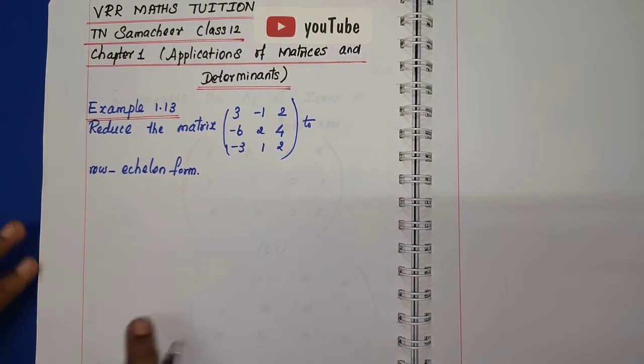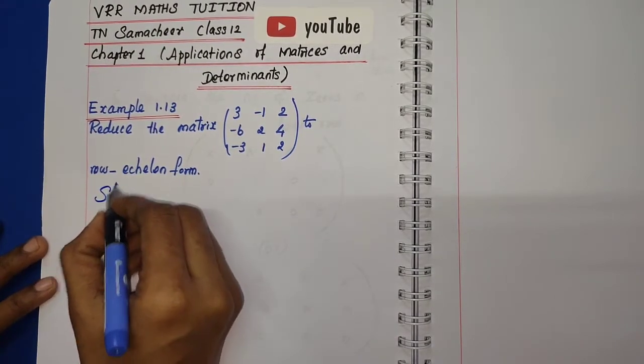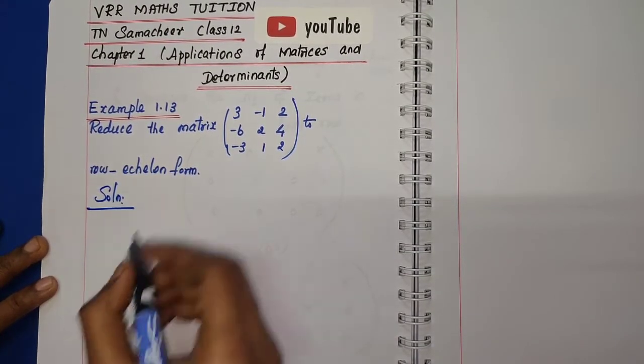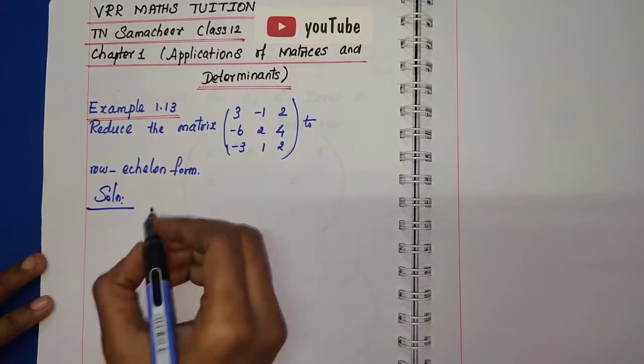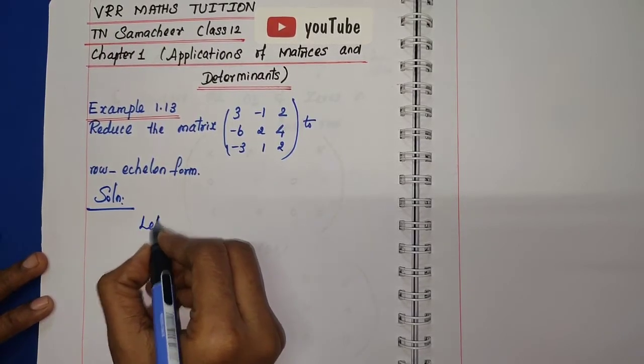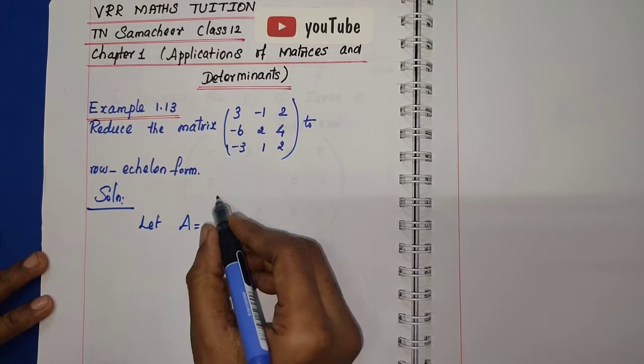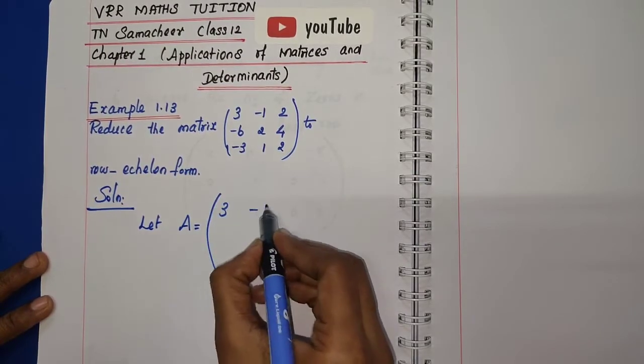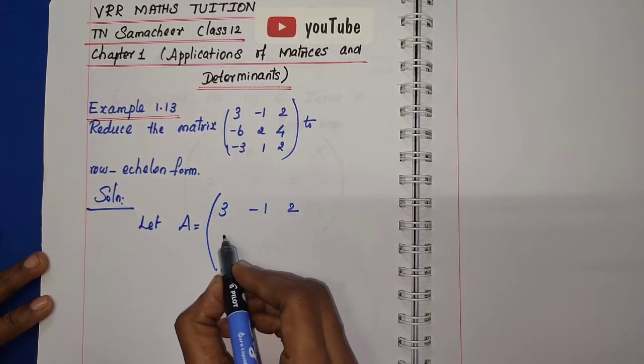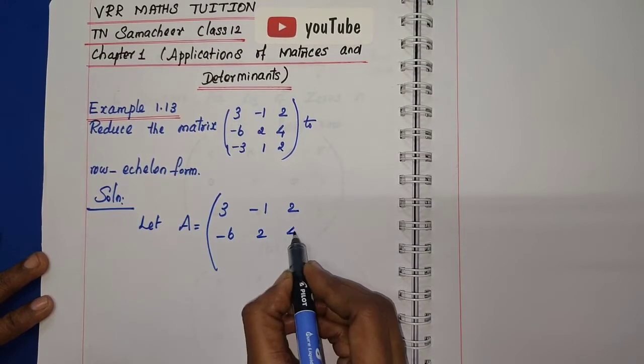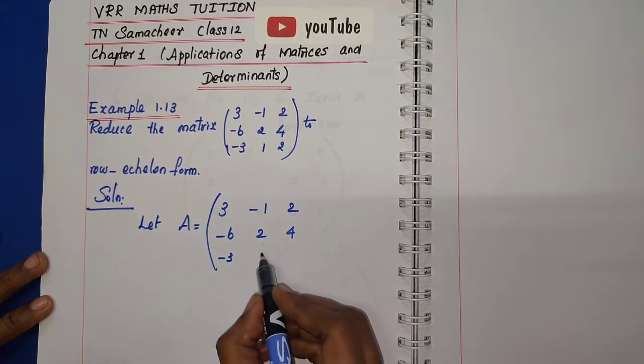Solution: The given matrix is considered as A. Let the matrix A equal [3, -1, 2; -6, 2, 4; -3, 1, 2].